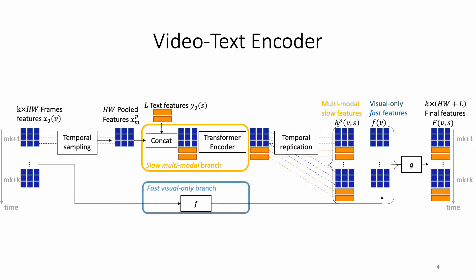The fast visual-only branch preserves the original frame rate to recover local spatial-temporal information. This branch is lightweight as it does not use any attention layers and does not backpropagate gradients to the visual backbone during training.